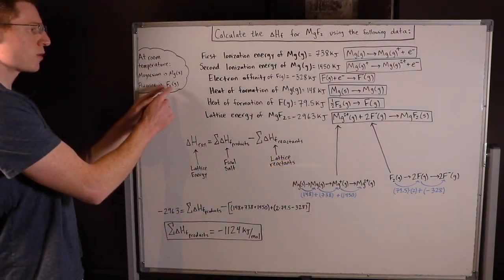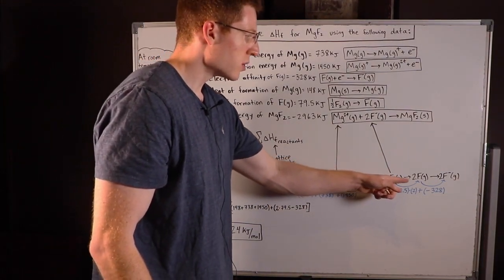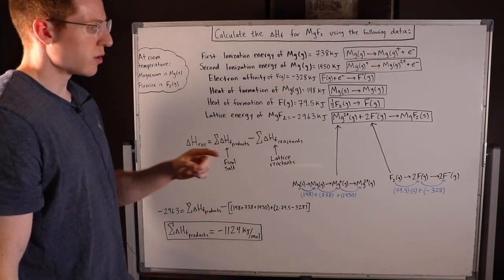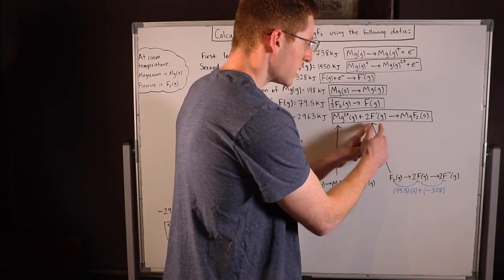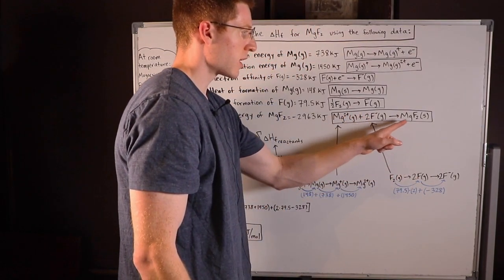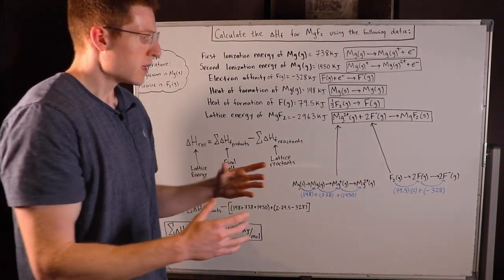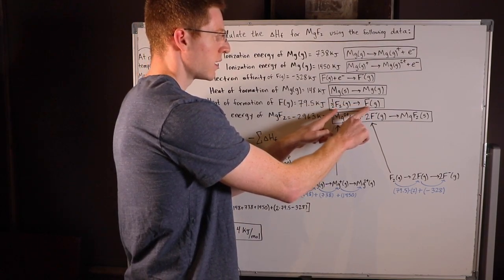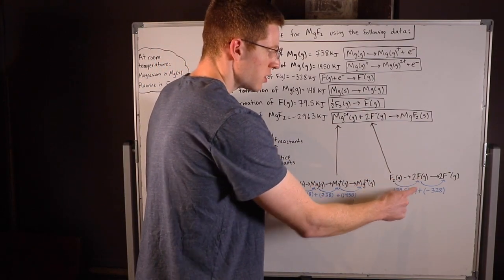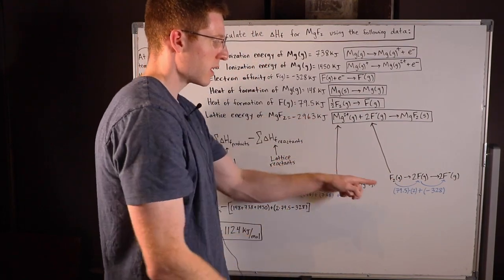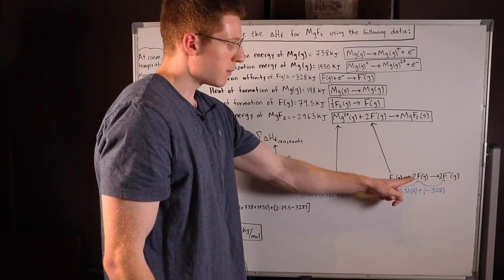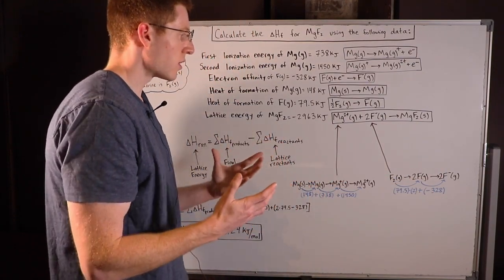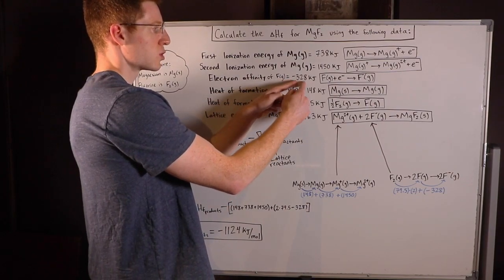For the fluorine: it started at F₂ gas, and we had to go to F gas — we broke apart the F₂ into just one F. We need two of them to balance out the reaction since we have two fluorines in MgF₂. So I'm going to multiply the 79.5 kilojoules by two to account for that. Then we went from two fluorine gas to two fluorine minus gas by giving it an electron, which was associated with negative 328 kilojoules.